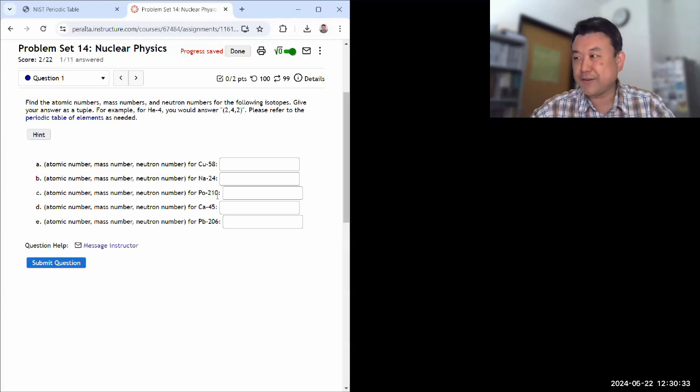Let me start with question one, and then I'll be doing question two, eight, ten, and then eleven. I don't have fingers for eleven. Yeah, one, two, eight, ten, and eleven. So this is question one. It says, find the atomic numbers, mass numbers, and neutron numbers for the following isotopes. Give your answer as tuple.